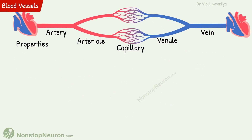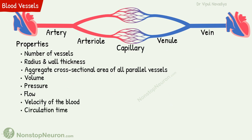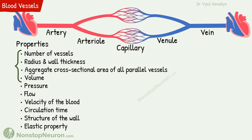Now several properties of these vessels vary at different levels. These properties are: number of vessels, radius and wall thickness, the aggregate cross-section area of all parallel vessels at a particular level, volume, pressure, flow, the velocity of the blood, circulation time, structure of the wall, and elastic property. In this video we will study the first four properties.